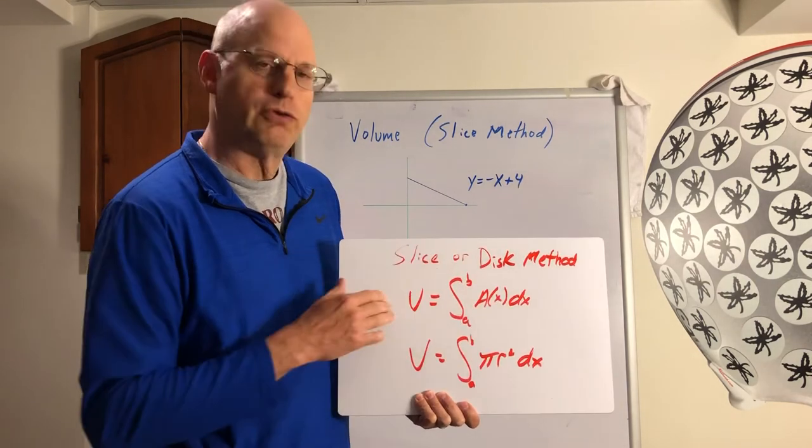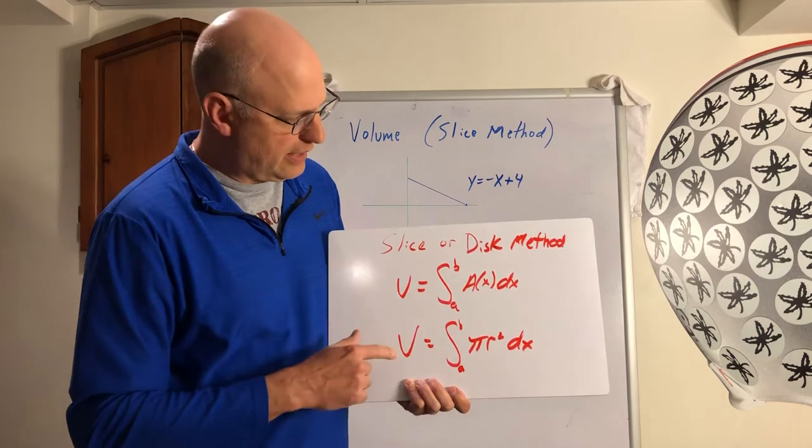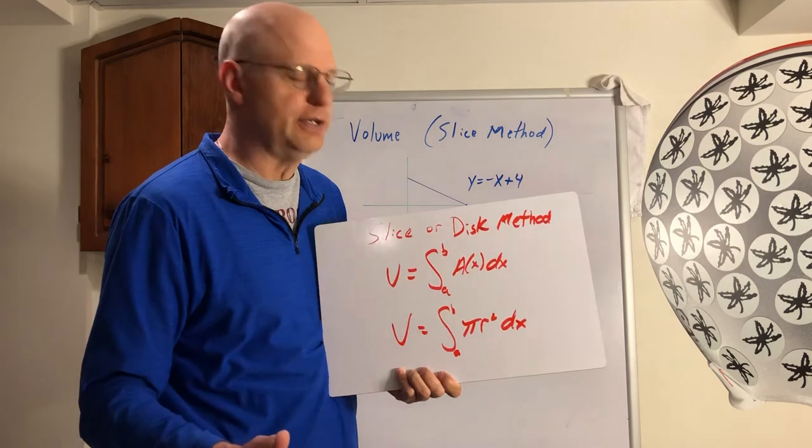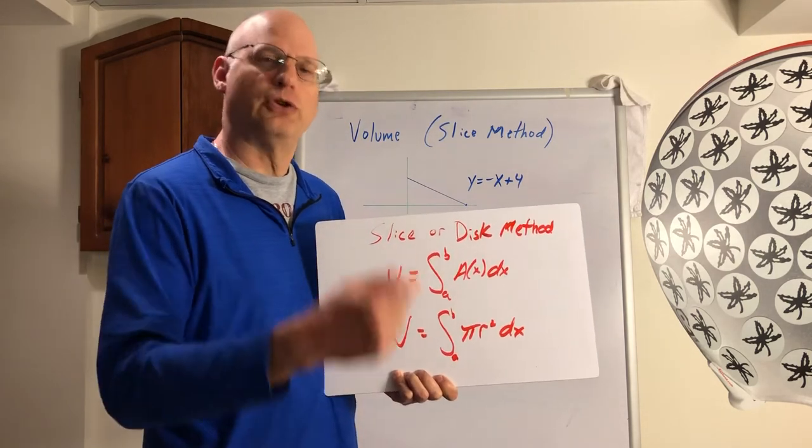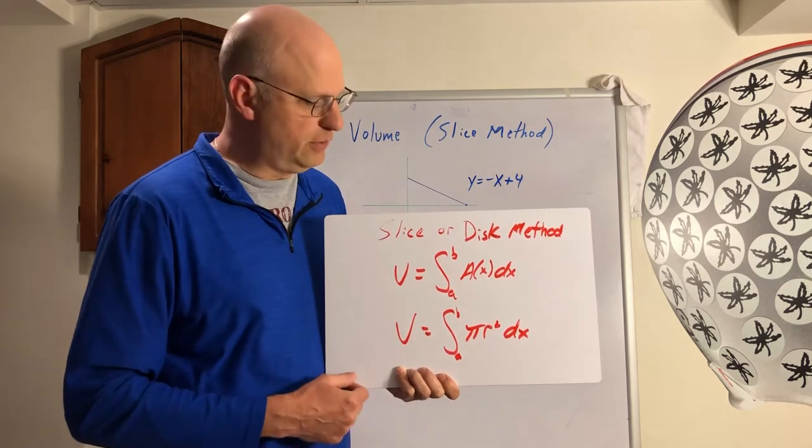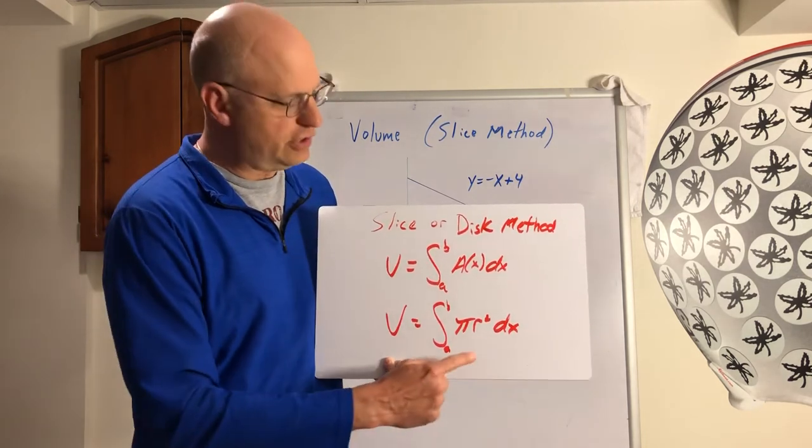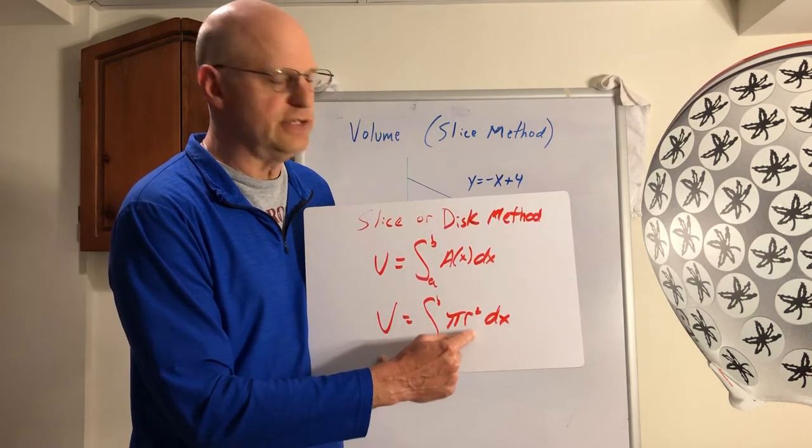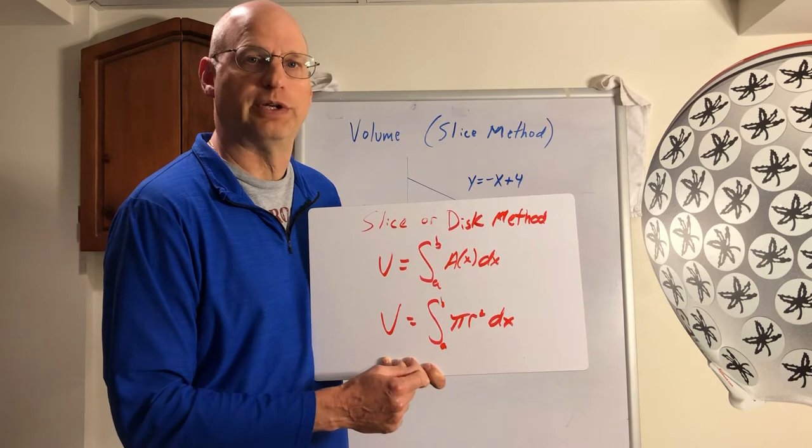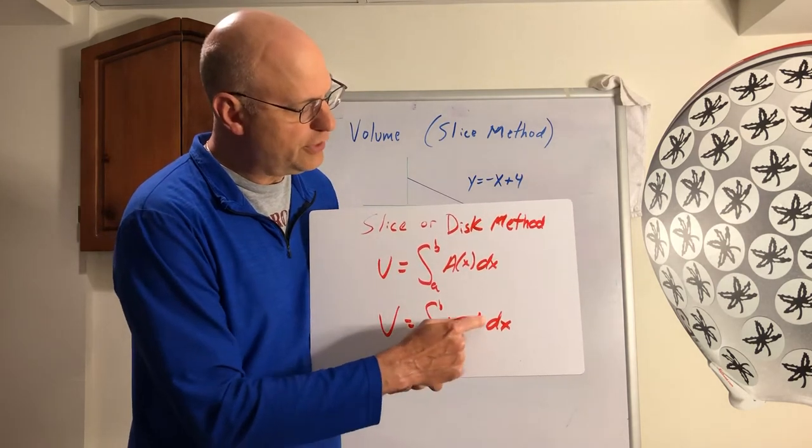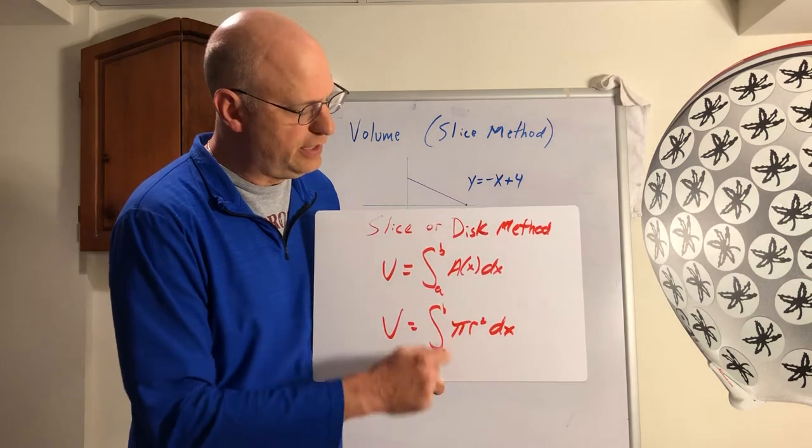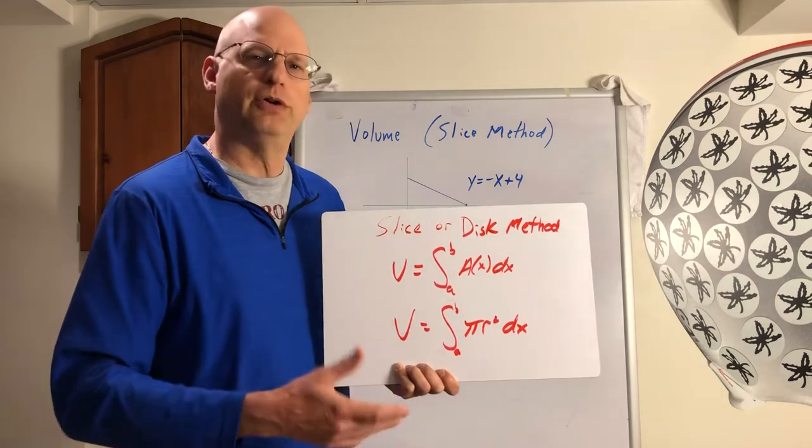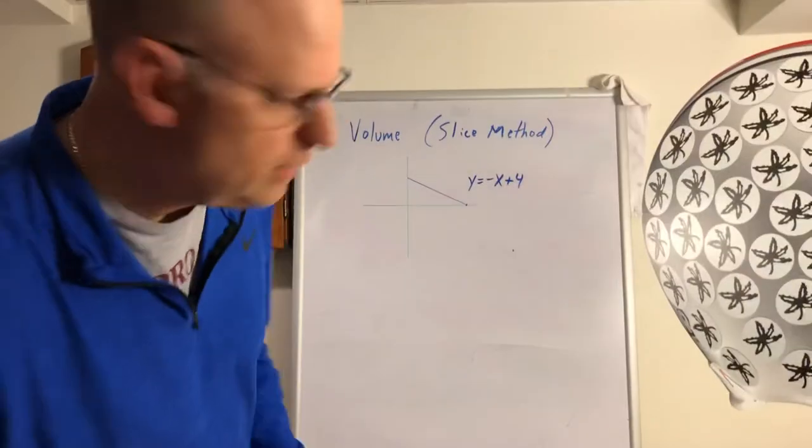Now what we're going to look at for this year is we're just going to focus in on the cross-sectional areas being circles, like the circular slice of bologna. Well, the cross-sectional area then is going to be pi r squared. The r is just really going to represent what the radius of that particular slice is going to be. So pi r squared, there's your cross-sectional area times your dx, and the a and the b are still going to be your bounds of integration.